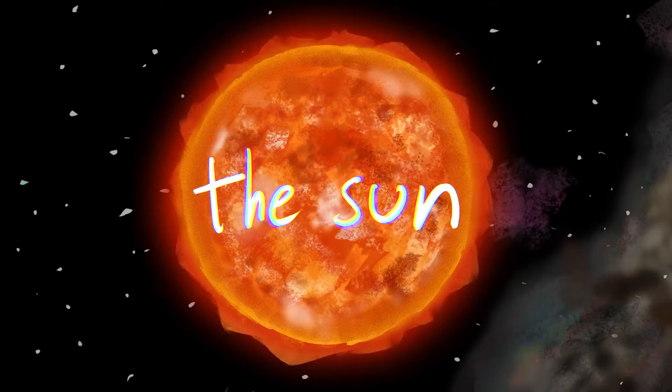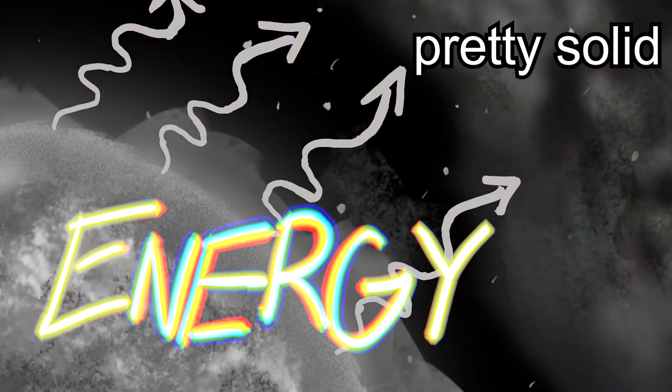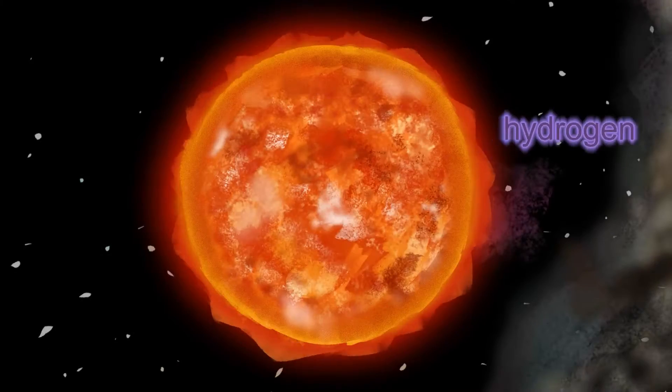Check out the sun. It's a plasma ball that burns hydrogen into helium for energy. Pretty solid stuff. When it's older, it will run out of fuel, grow, destroy Venus, and then burn out and die.